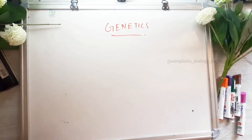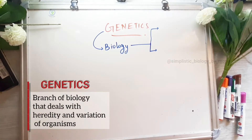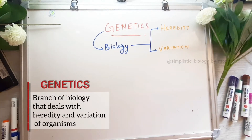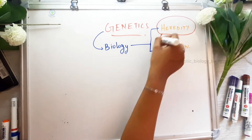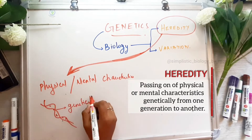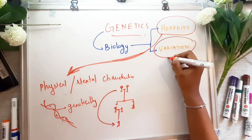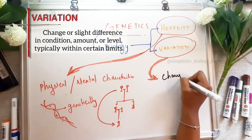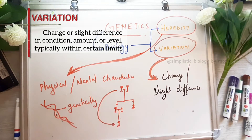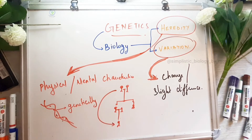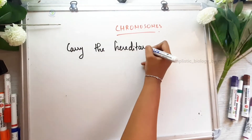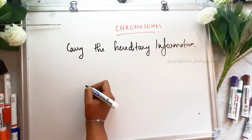Genetics is a branch of biology. What does it include? Heredity and variation. Heredity is when characteristics are passed from one generation to the other. Variation is the slight difference or change from one generation to the other.